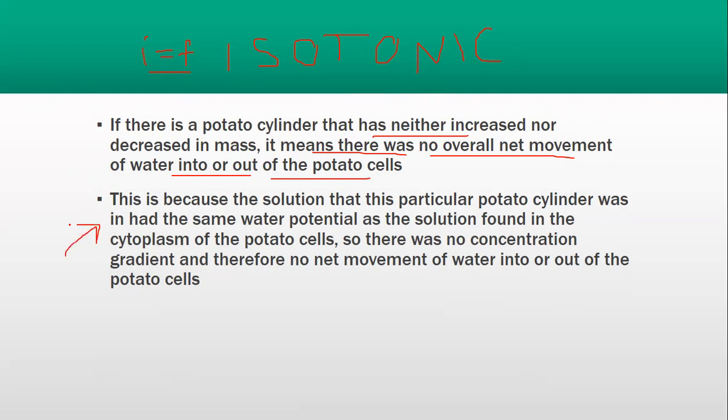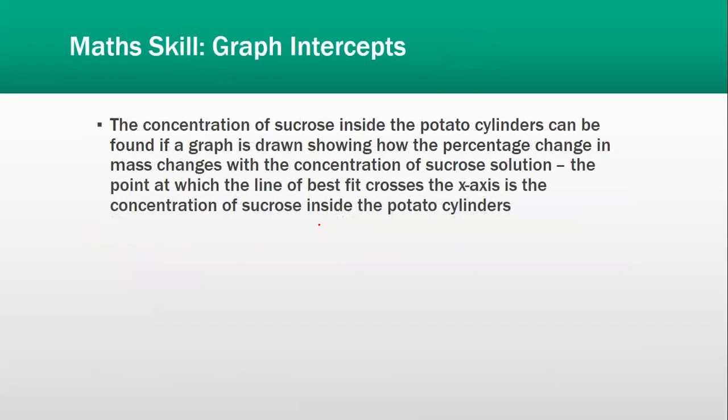This is because the cylinder was at the same water potential as the solution. The water potential inside the potato cell and the water potential in the solution was the same. This is an isotonic solution when the initial mass equals the final mass, which means there was no net movement of water into or out of the cells.